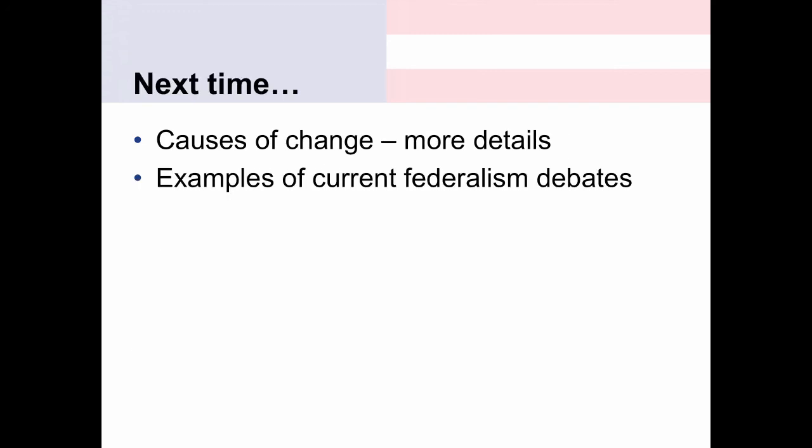So that's the background of federalism. I've divided the federalism lecture into two parts — this is part one. In the next part, we're going to talk about the causes of this change: why specifically did we see a shift from dual federalism to cooperative federalism? We'll go into very specific detail about that and then look at some examples of current debates wrapped up in this notion of federalism. That's it for now — see you next time.